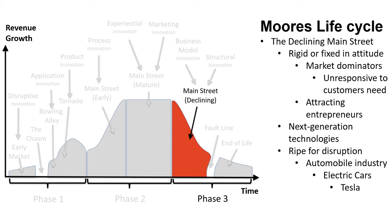Stage 7: The Declining Main Street. The category has become rigid and the market dominators are unresponsive to customer needs. Customers are actively looking for relief, a development that is attracting entrepreneurs. The next-generation technologies are on the horizon, although none has gone through the tornado. The market is ripe for some form of disruption, either through an obsoleting technology or a radical innovation business model. Electric cars, with Tesla at the forefront, started that development in the automobile industry.